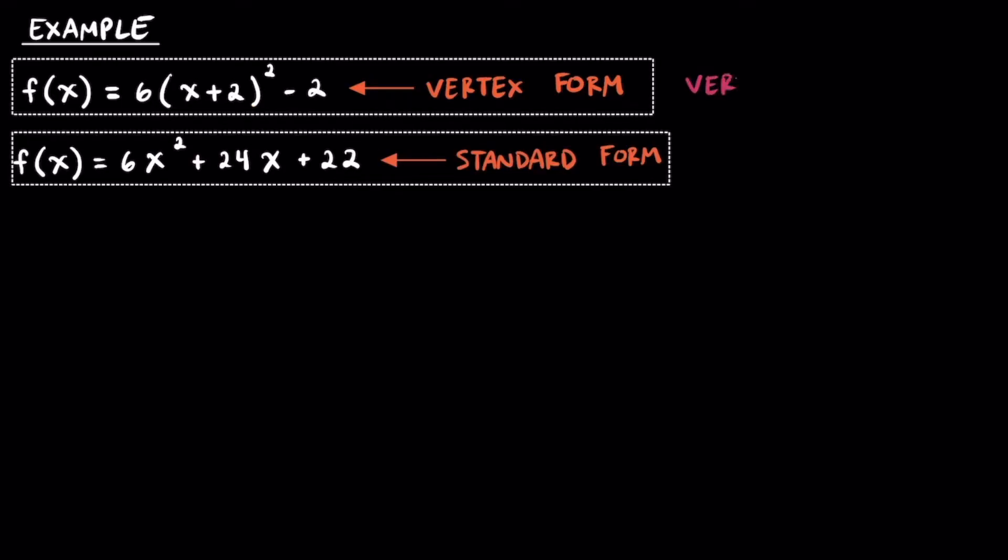While vertex form lets us know the vertex is at (-2, -2), we're going to use standard form to see if we can factor and find zeros, or x-intercepts. To do that, we're going to set the trinomial equal to 0, and I'm just going to simplify this a little bit by dividing both sides by 2 since it's a common factor.